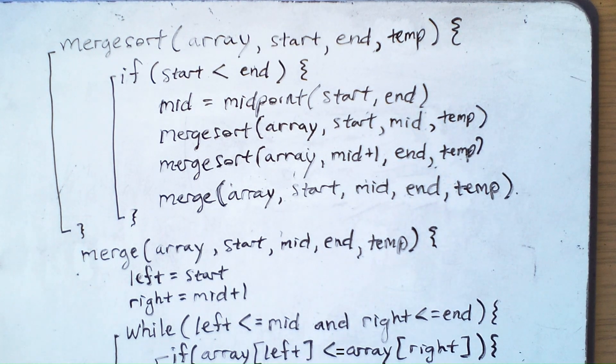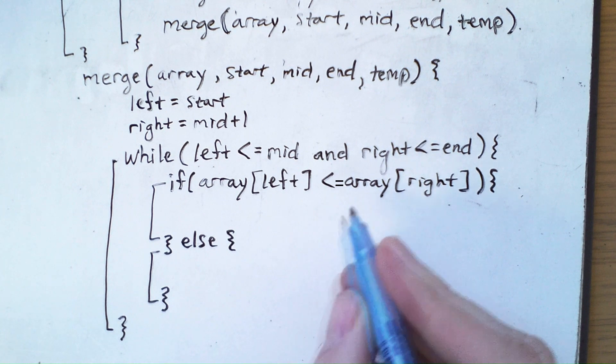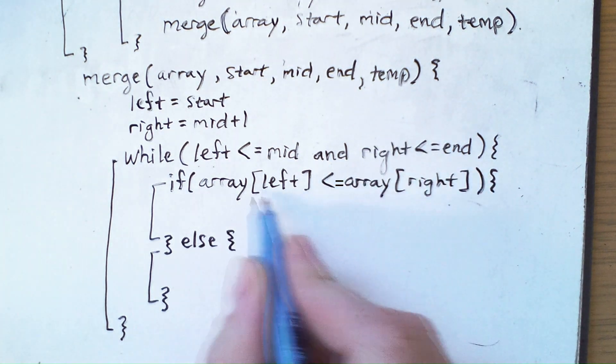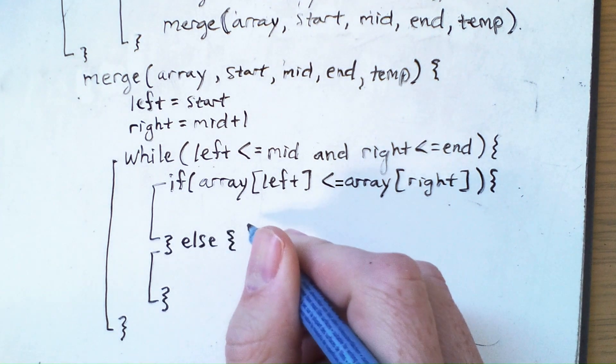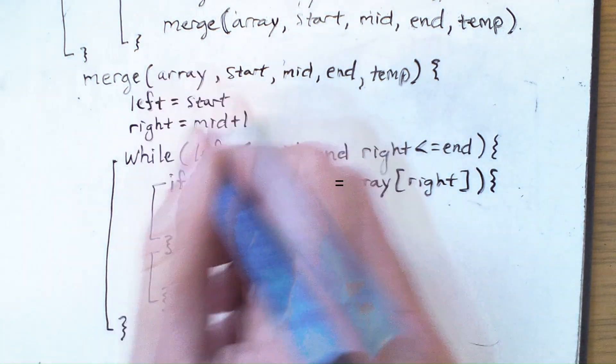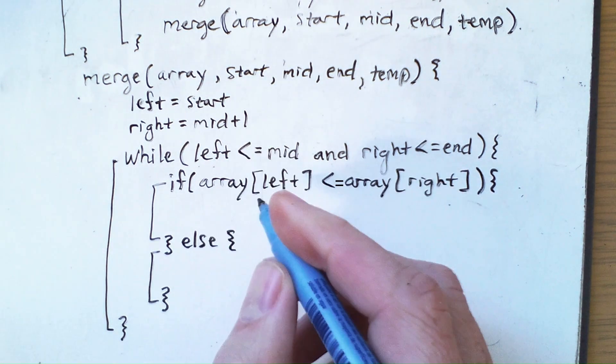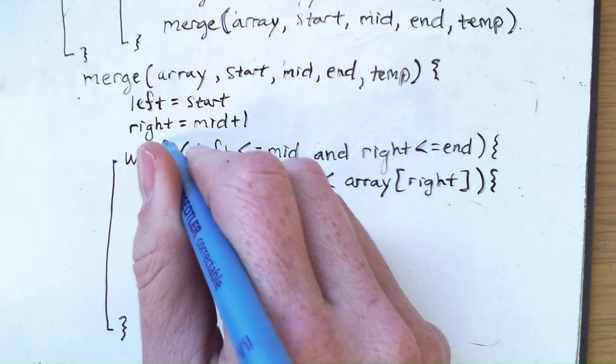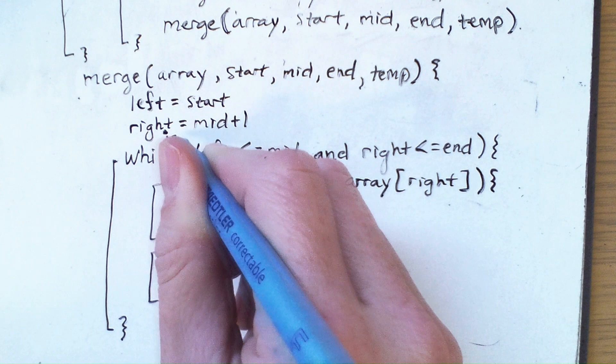But now, going back to the code for merge, we can simply put the smaller value into temp. Now, the question is, where do we put it? Well, we have to have another index tracking the location in temp that we're adding an element to. I'll just call that i and initialize it right here.